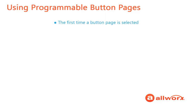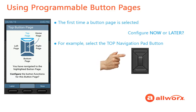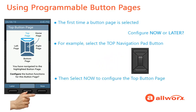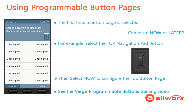The first time a button page is selected without any buttons configured, a button page pop-up appears with the option to configure now or later. If later is selected, the pop-up will appear again the next time you select that button page. For example, select the top navigation pad button, then select now to program the top button page. Use the same steps as configuring any programmable button. Please see the Verge Programmable Buttons training video for additional details on how to configure a button.